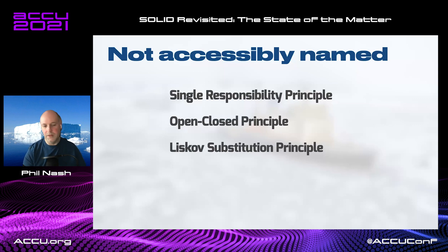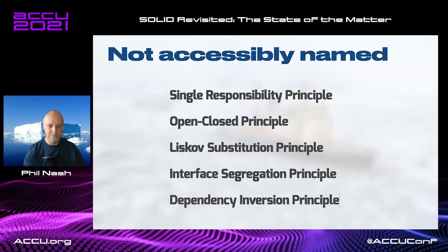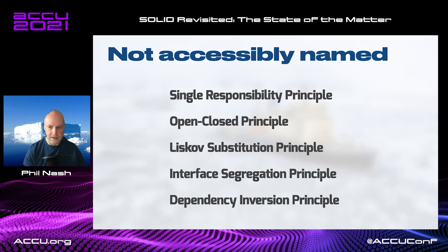Perhaps the worst one is the Liskov Substitution Principle — it's named after a person, which tells you nothing about it. It's got the word 'substitution' in there, maybe that tells you a bit, but you really have to do quite a bit of reading to understand it. The Interface Segregation Principle is straightforward enough but a much grander name than it needs to be — a fairly simple principle that is itself a derivation of other principles anyway. And then the Dependency Inversion Principle: a really simple principle with a name that's almost obfuscating it. Really, you can say this is just about using polymorphism with interfaces — 'program to an interface' is a better name.